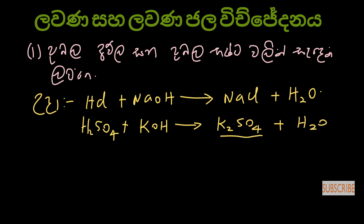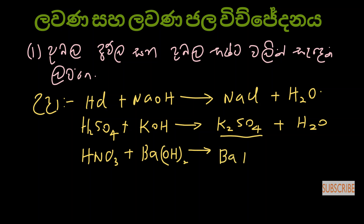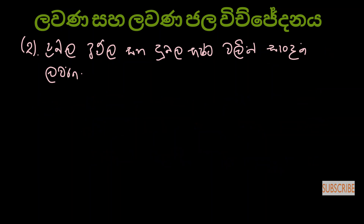This is a strong base and a strong acid combination. Nitric acid with barium hydroxide gives potassium sulfate — a strong base and weak acid combination. HCl with ammonia gives ammonium chloride. Ammonium chloride is a strong acid and weak base combination.